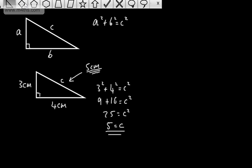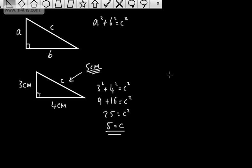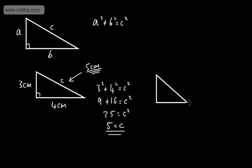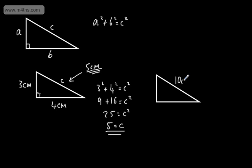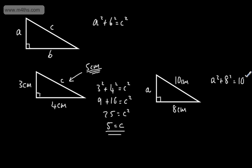Let's look at another example. In that case we were finding the hypotenuse, but that won't always be the case — we might have to find one of the shorter sides. So let's say the hypotenuse is 10 centimetres, one of the shorter sides is 8 centimetres, and we want to find the remaining length, which we'll call A. What we have then is A squared plus B squared (8 squared) equal to C squared (10 squared).